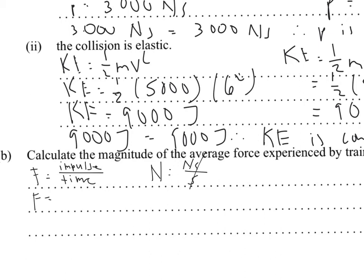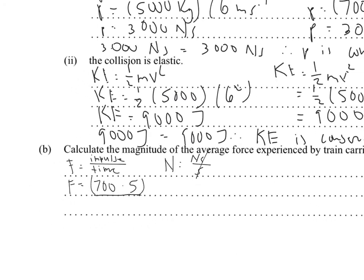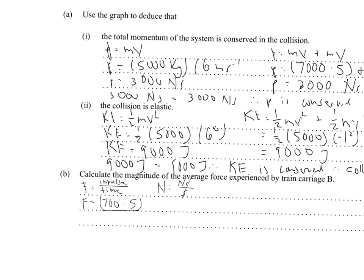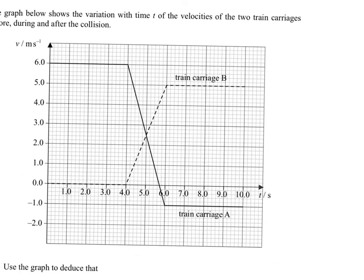So, you're going to have F is equal to 700 times 5, which is, again, the change in momentum as the initial momentum of carriage B was 0 over the time. And you can see from the graph that the period of collision is this section right here, which, you can see, has a duration of 2 seconds.